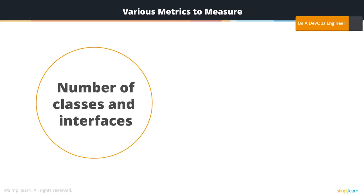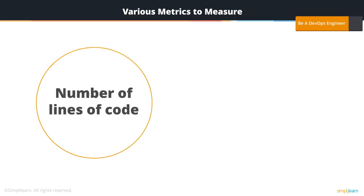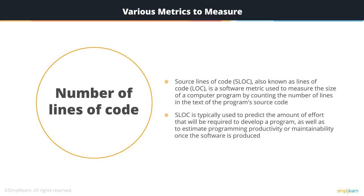Then you can have the number of classes and interfaces, which are measured to check for code complexity or function point complexity. Source line of code (SLOC), also known as line of code, is a software metric used to measure the size of a computer program by counting the number of lines in the program's source code. SLOC is typically used to predict the amount of effort required to develop a program, as well as to estimate programming productivity or maintainability once software is produced.